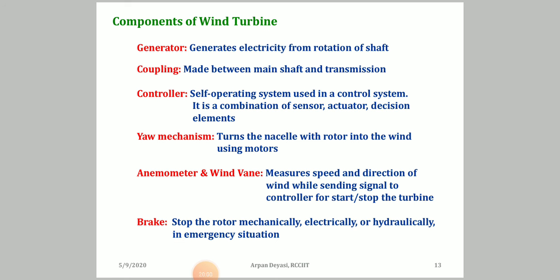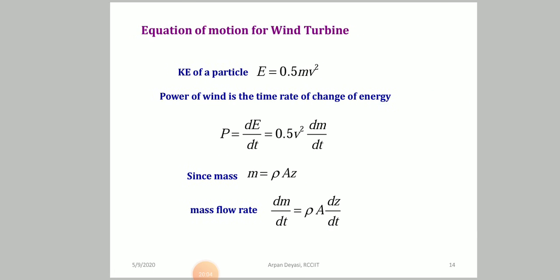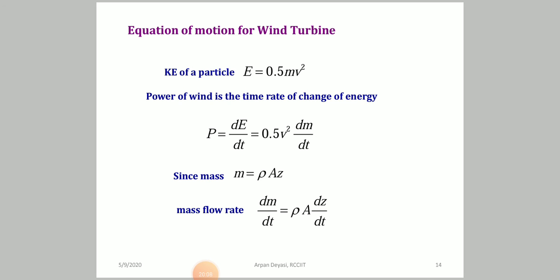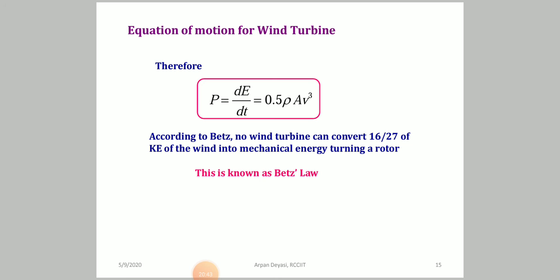To determine how much power can be extracted, we start from the kinetic energy equation: E = ½mv². Power of wind is the time rate of change of energy (dE/dt). Since mass equals density times volume (area times distance), the mass flow rate is density times cross-section times velocity. Substituting into the power expression gives: Power = 0.5 × ρ × A × v³, where ρ is air density, A is the cross-sectional area, and v is wind velocity.